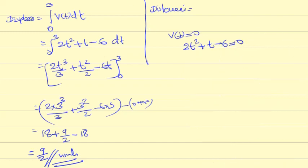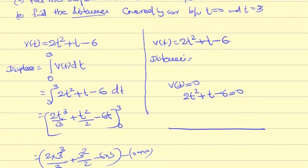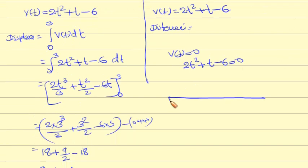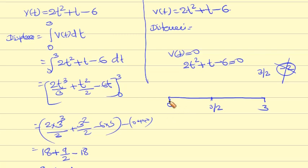The roots are t = 3/2 and t = -2. On the interval [0, 3], we mark the point t = 3/2. Between t = 0 and t = 3/2, v(t) is negative. Between t = 3/2 and t = 3, v(t) is positive.